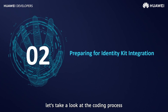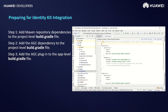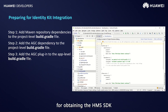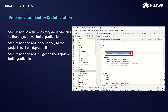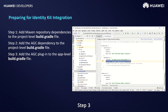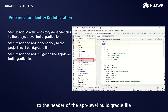Now let's take a look at the coding process. But before that, we need to prepare the development environment. This involves three steps. Step 1: add the Maven repository dependencies to the project-level build Gradle file for obtaining the HMS SDK. Step 2: add the AGC plugin dependency to the project-level build Gradle file. Step 3: add the AGC plugin dependency to the header of the app-level build Gradle file.